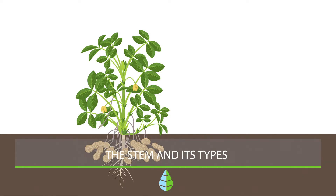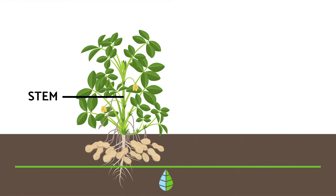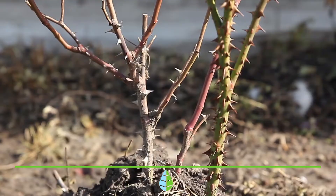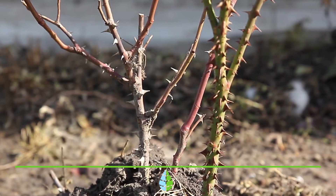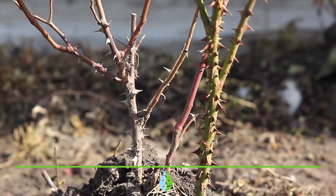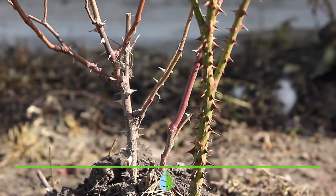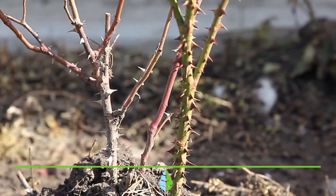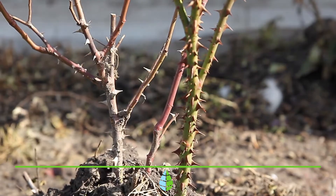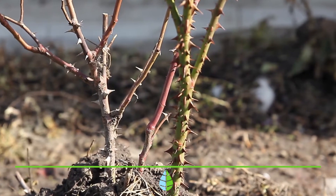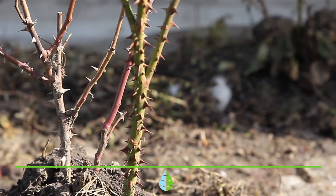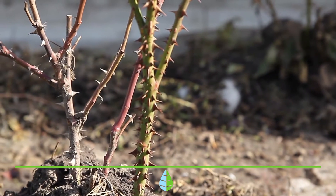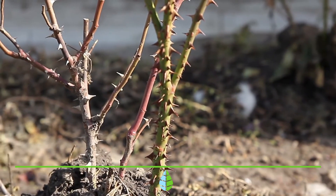The stem and its types. The stem is the aerial part of the plant that is characterized by growing in the opposite direction to gravity, that is, from the bottom up. Although it is commonly known as the aerial part of the plant, it can sometimes be underground. That's why we divide it into two types: underground stems, which are located underground and are subdivided into tubers, rhizomes, and bulbs; and aerial stems, which are located above the ground and can be upright, climbing, fickle, or creeping. There are also special stems such as those with thorns, tendrils, or stolons.